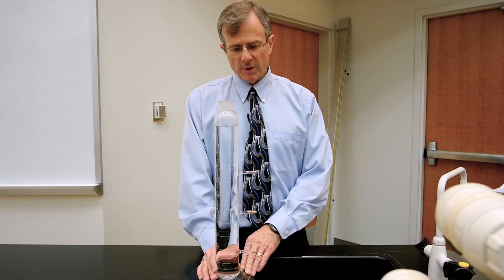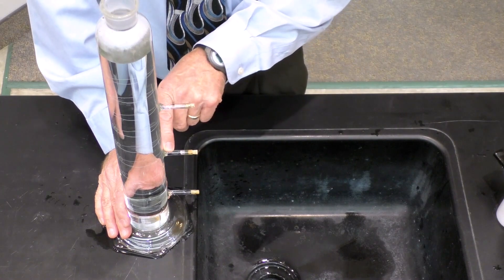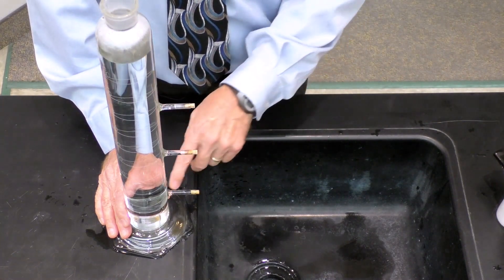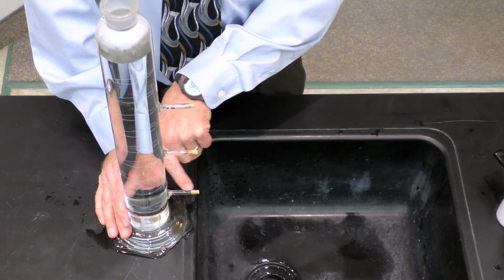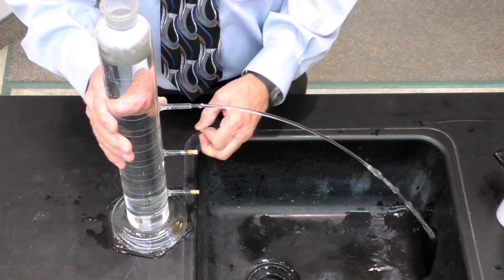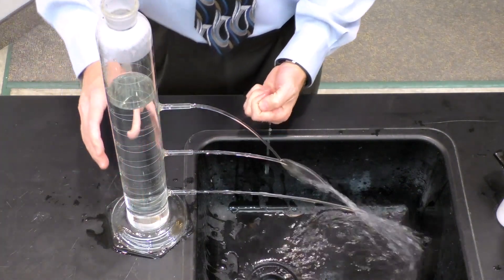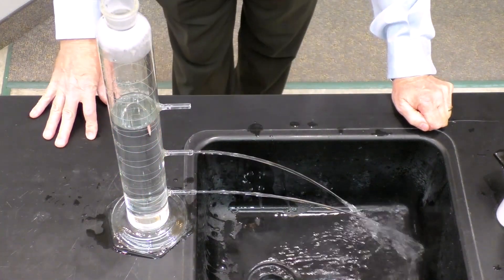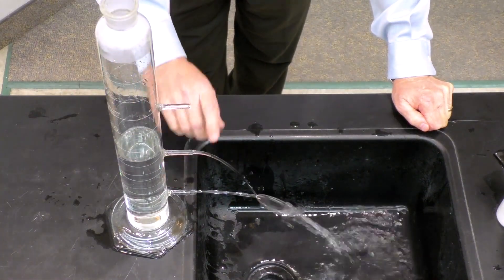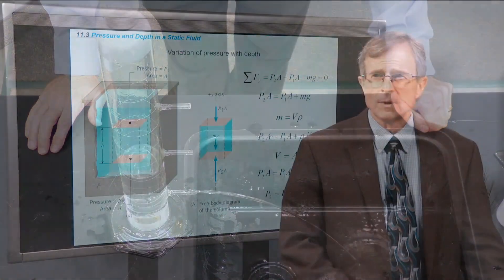So to demonstrate the different pressures at the different depths in this fluid, I'll pull these stoppers out. The deeper we go, the higher the pressure and the faster the velocity will come out. Okay, so we're losing fluid, but I think you can see that always the deepest one had the highest velocity and the highest pressure.